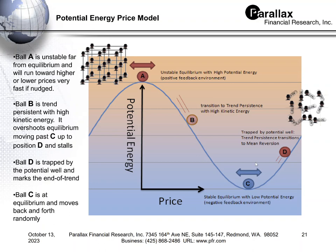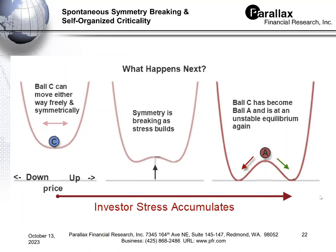The tendency is for point D to be the end of the trend, and then the market falls back and oscillates around point C. It's a simple model. Now, how do you get to point A from point C? Imagine you are at point C, in equilibrium — a negative feedback environment where price rocks a little bit up, a little bit down, very symmetrically.